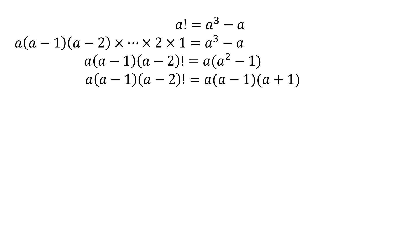The right-hand side now becomes a times (a minus 1) times (a plus 1). The left-hand side is a times (a minus 1) times (a minus 2) factorial. We have a times (a minus 1) on both sides, so we can cancel it out. Now we have (a minus 2) factorial equals a plus 1.